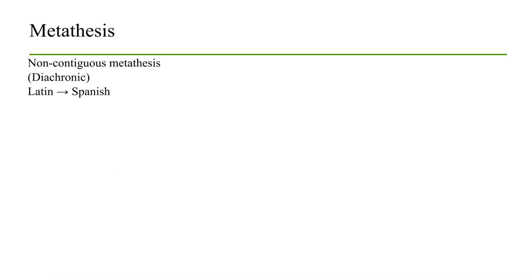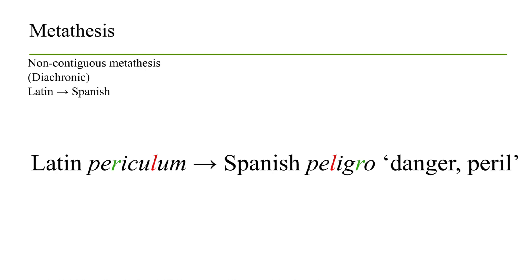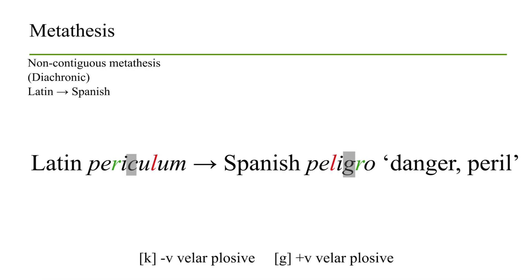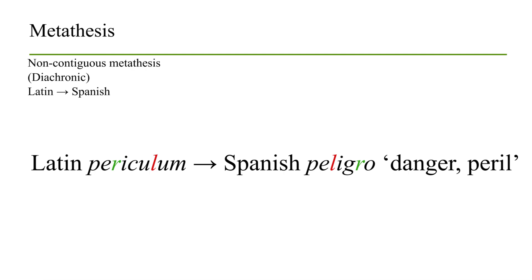A similar thing happened in the change from the Latin word 'periculum' to Spanish 'peligro,' meaning 'danger.' We're not discussing the vowel changes here — just the 'ra' and 'la' swapping places. There is also 'ca' becoming 'ga,' which is an example of voicing, but as far as metathesis is concerned, the two sounds have swapped places.